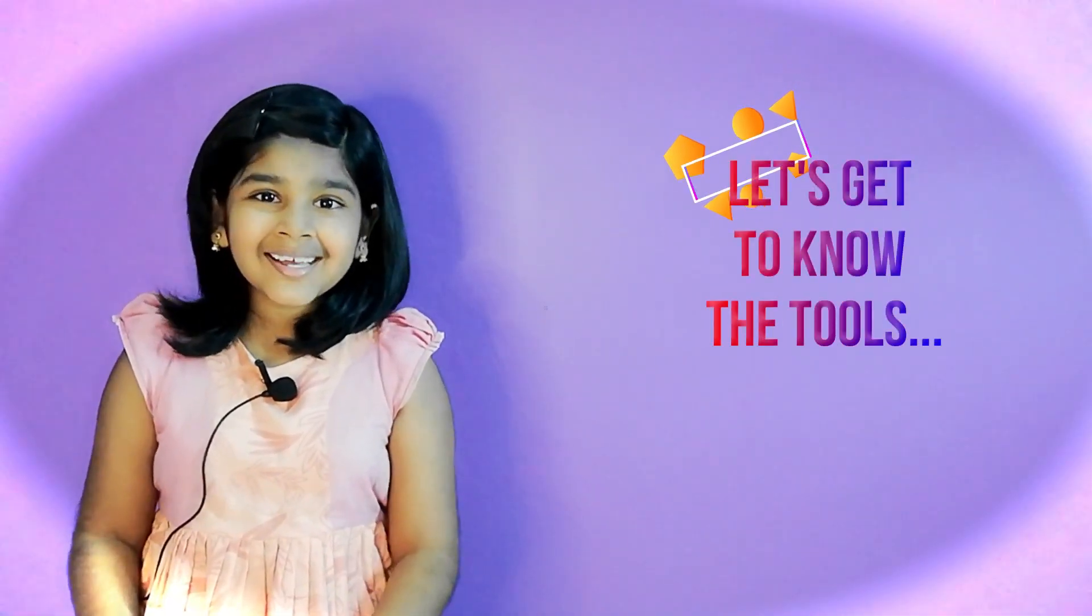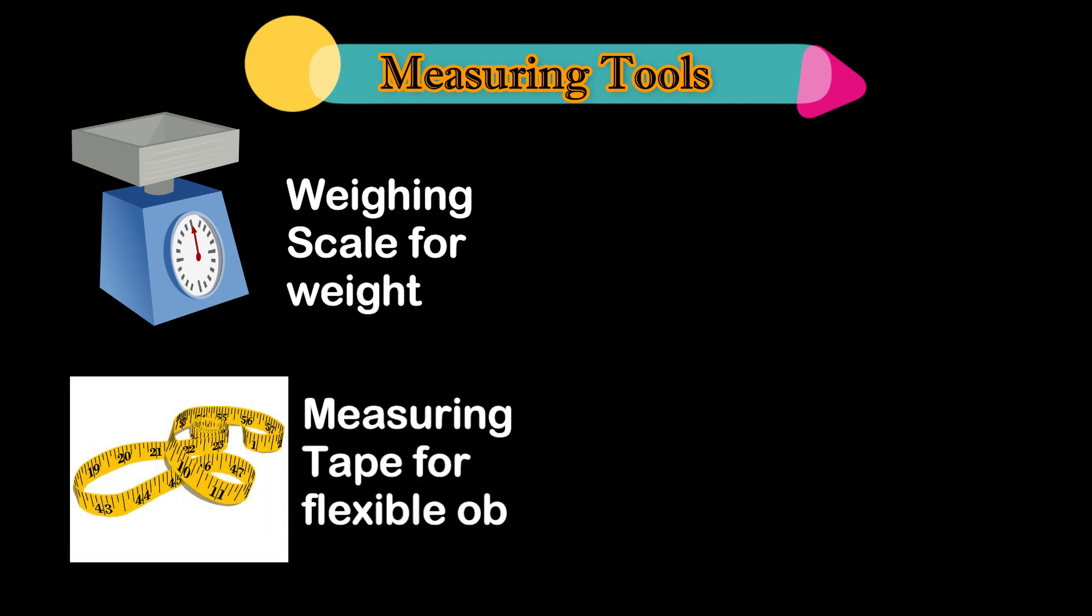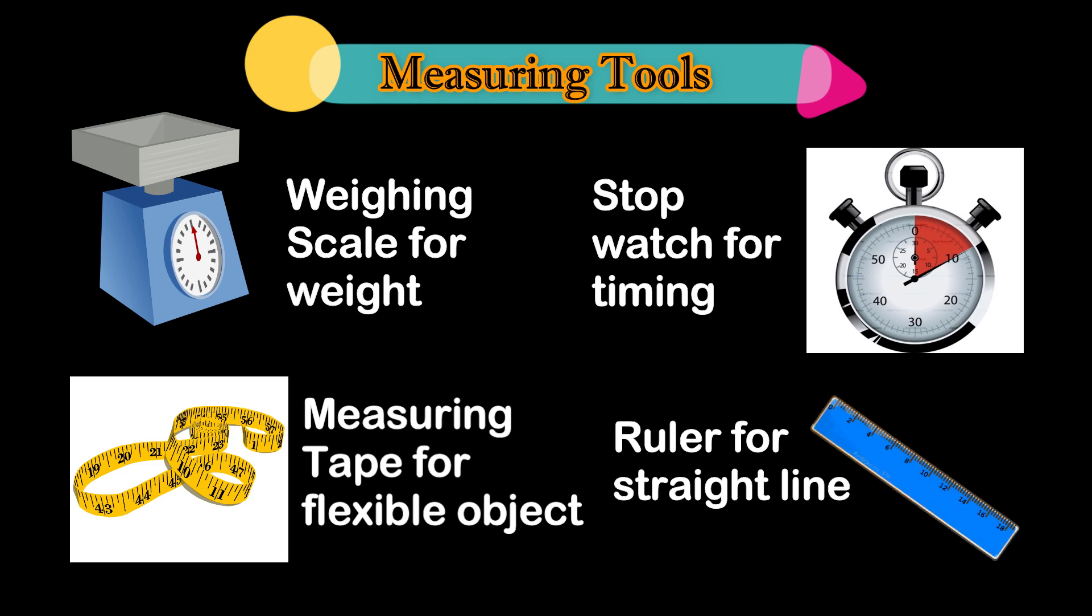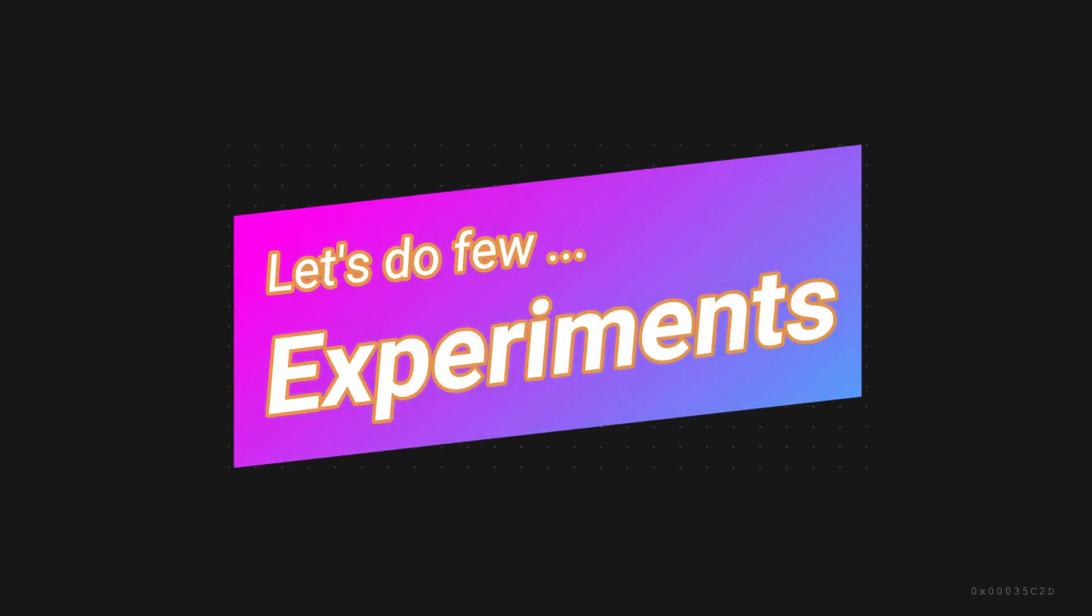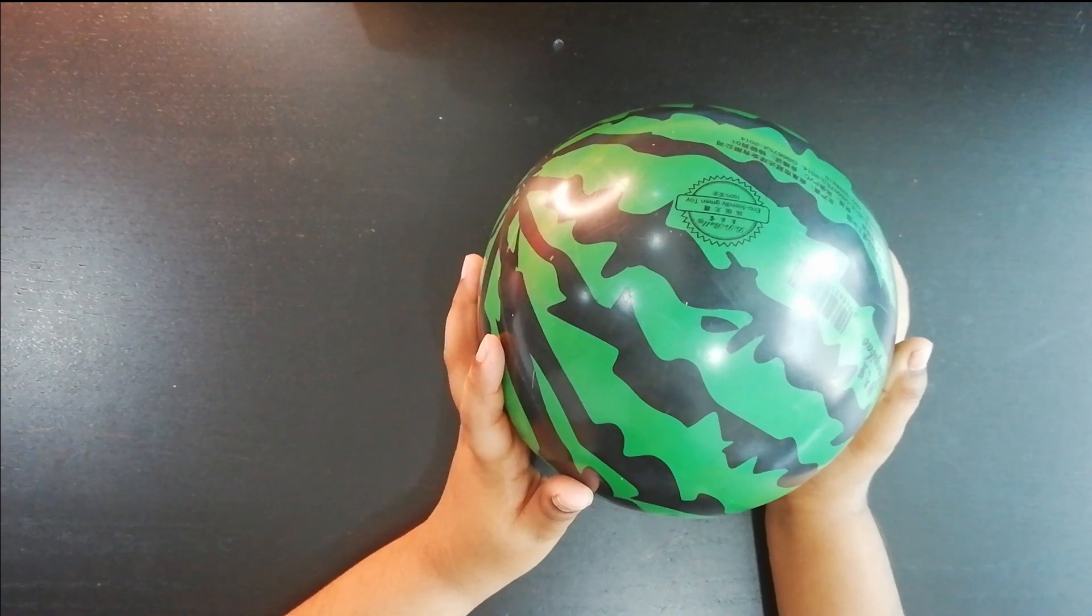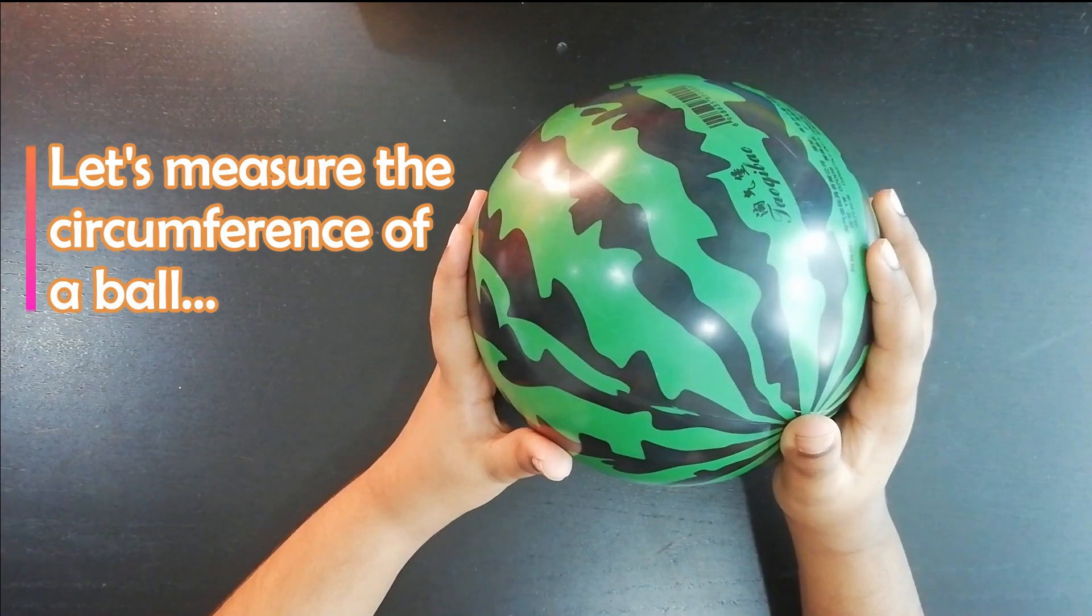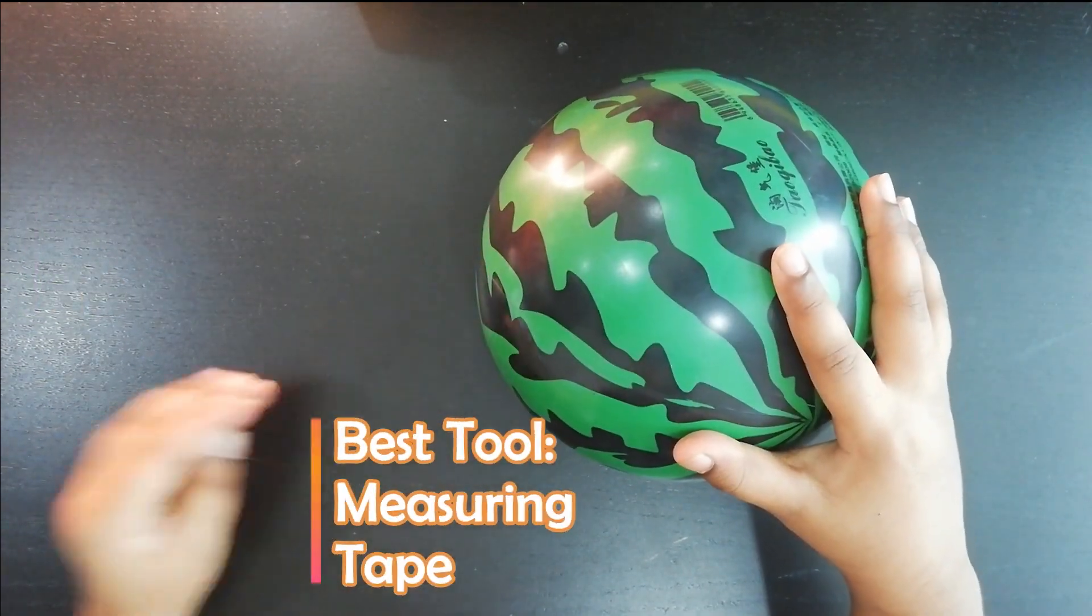Do you know what are the tools used for measuring? This is a ball. Now we are going to measure the circumference of the ball. The best measurement tool to measure the circumference of a ball is measuring tape.